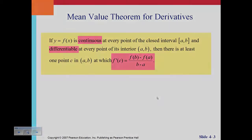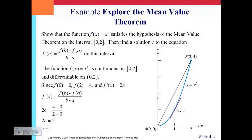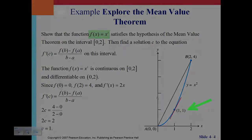This is an existence theorem. Looking at this example, we can numerically and graphically demonstrate the mean value theorem for derivatives. The function y equals x squared is continuous on the closed interval 0, 2, and also differentiable. At c equals 1, the derivative is 2, and the slope of the secant line a, b, is also 2. The instantaneous rate of change is equal to the average rate of change.